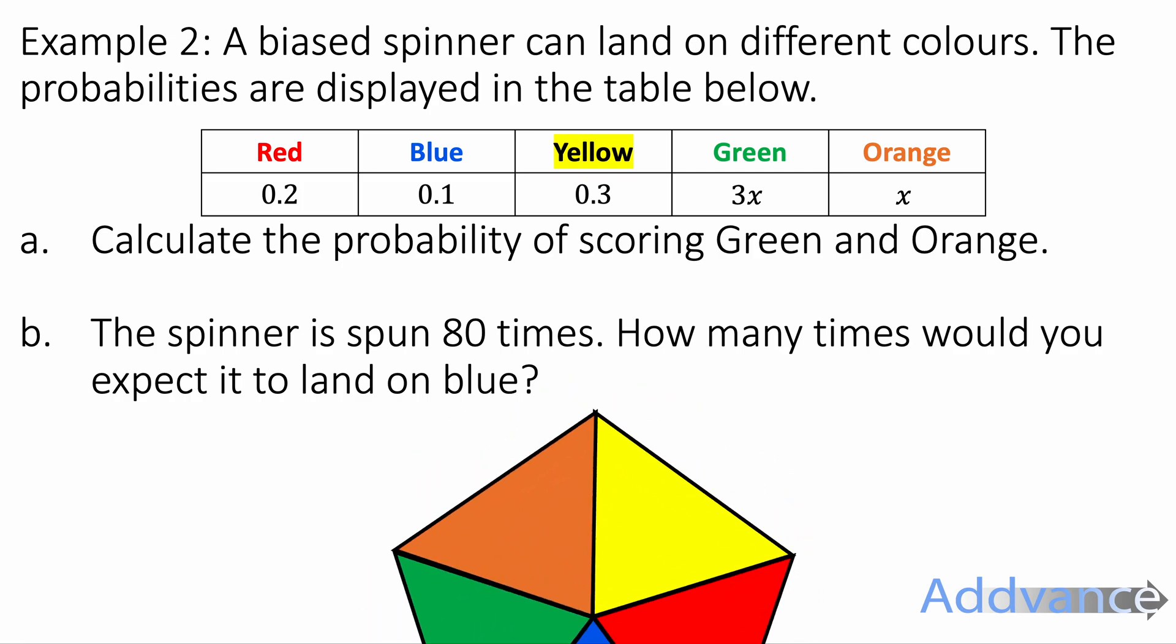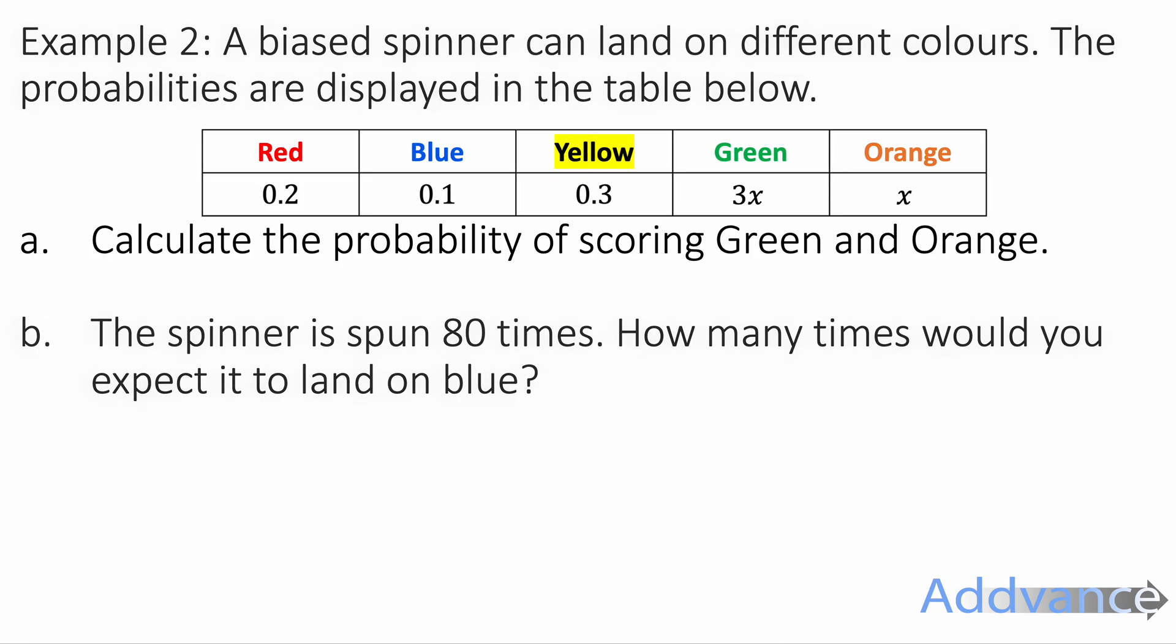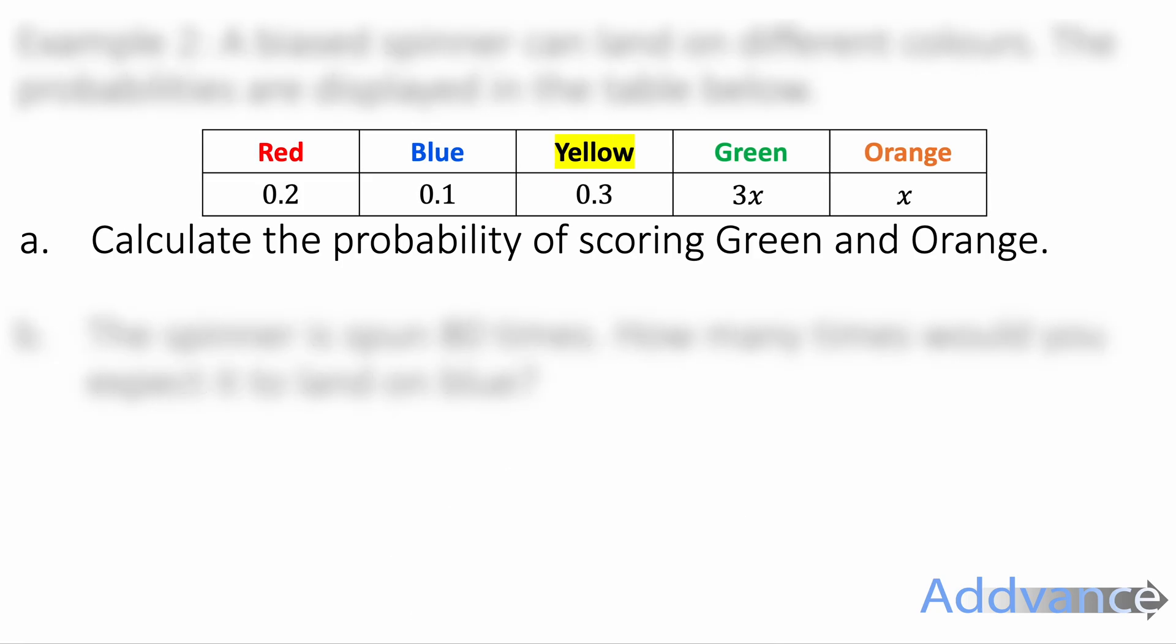We're going to calculate the probability of scoring a green or orange. Now we have got a clue here. It says the probability of green is 3x and the probability of orange is x. And so I think we're going to have to do a bit of algebra here. The trick is to realise that all these probabilities will add up to 1.